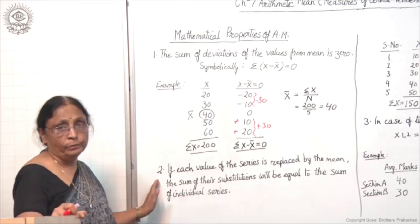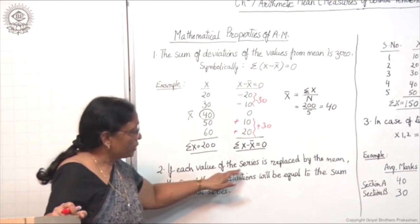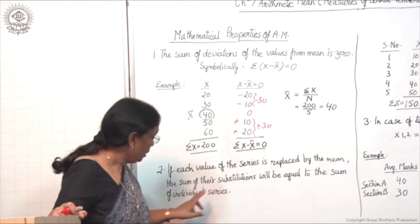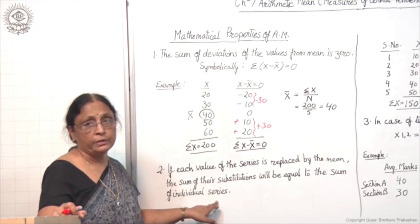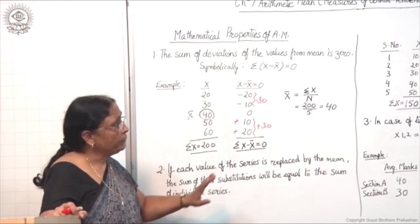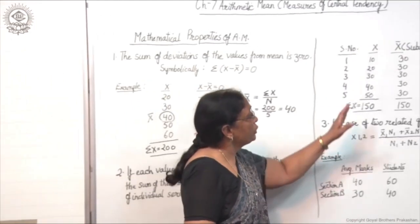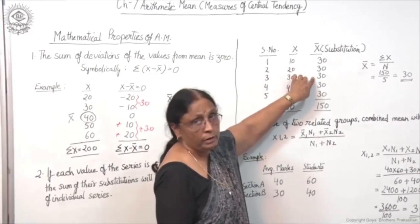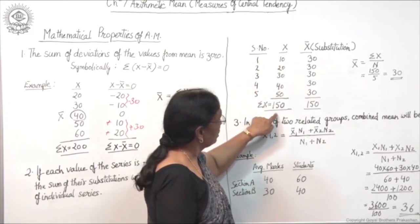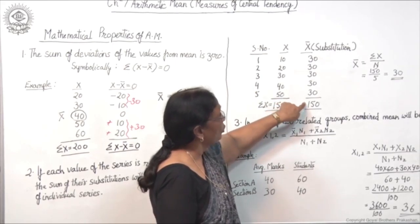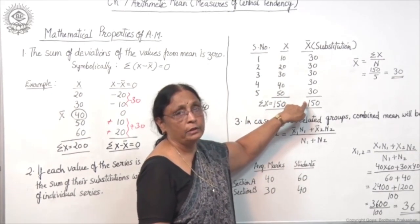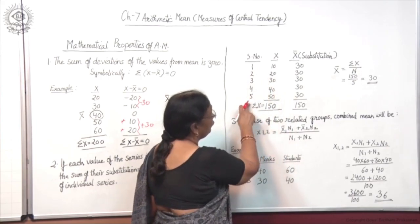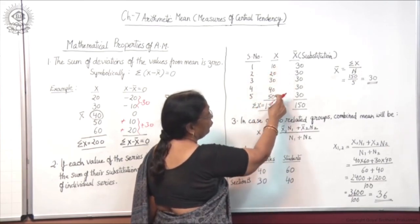The second property: if each value of the series is replaced by the mean, the sum of their substitutions will be equal to the sum of the individual series. That means if you substitute each value by the actual mean, the total of the substituted values will be the same as the original total. For example, the data is x column: 10, 20, 30, 40, 50.